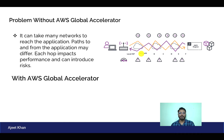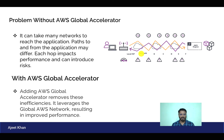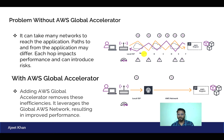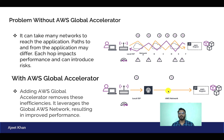Now with Global Accelerator, we can remove this inefficiency and leverage the global AWS network, resulting in improved performance. The request from the user will not go through different networks and hops. Here, the client on the left-hand side has its local ISP, and there are many AWS edge locations present around the world. With Global Accelerator, the nearest edge location will receive the request and directly forward it to our application through the AWS network — not through the public network. This results in less network risk and improved performance.